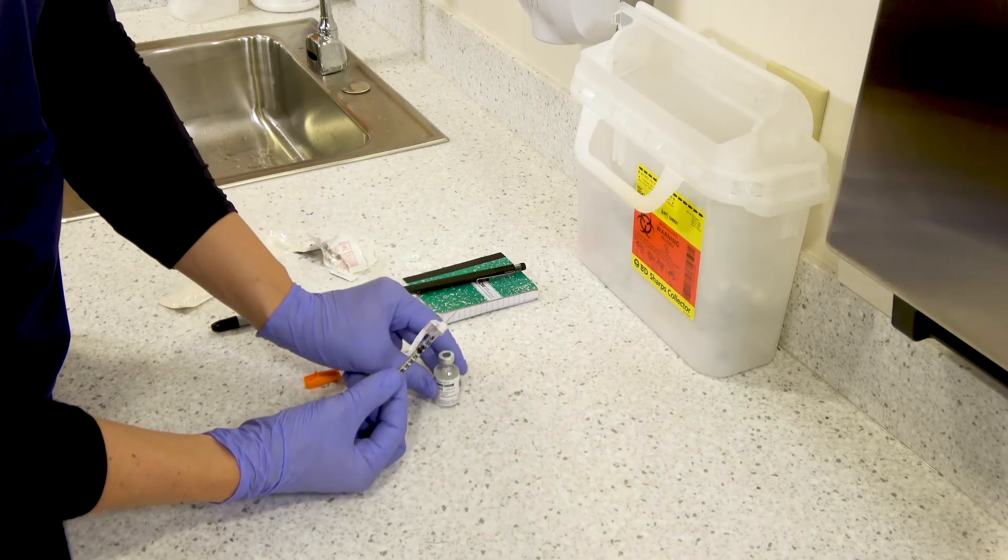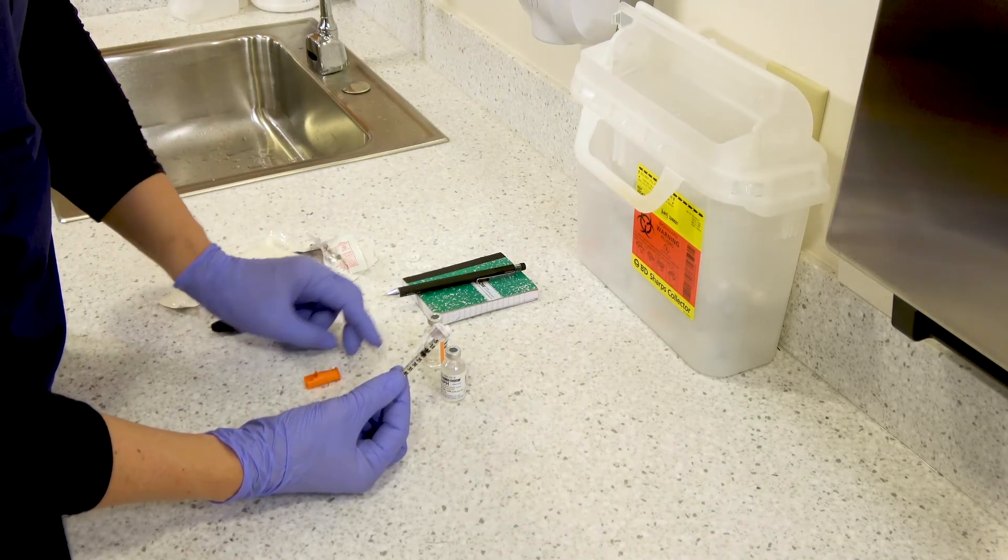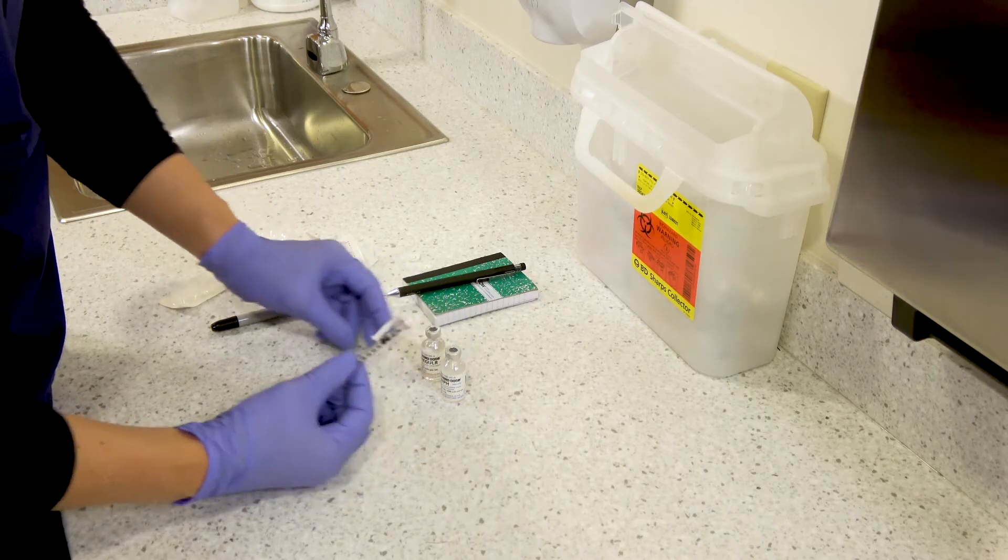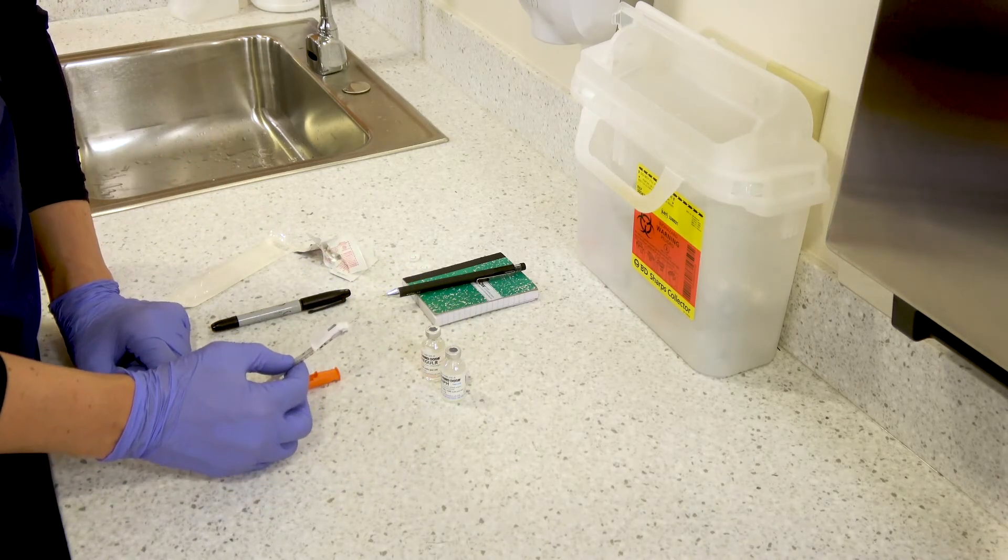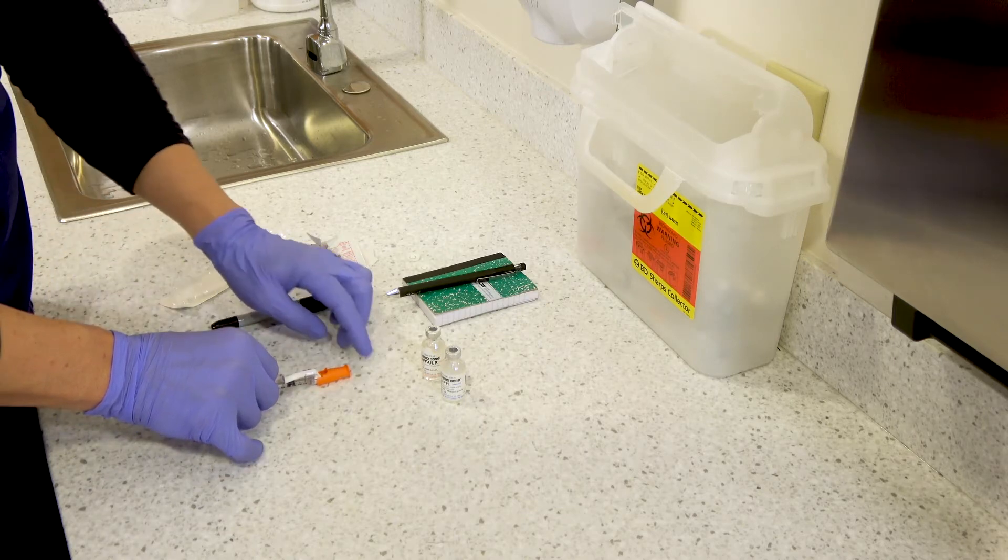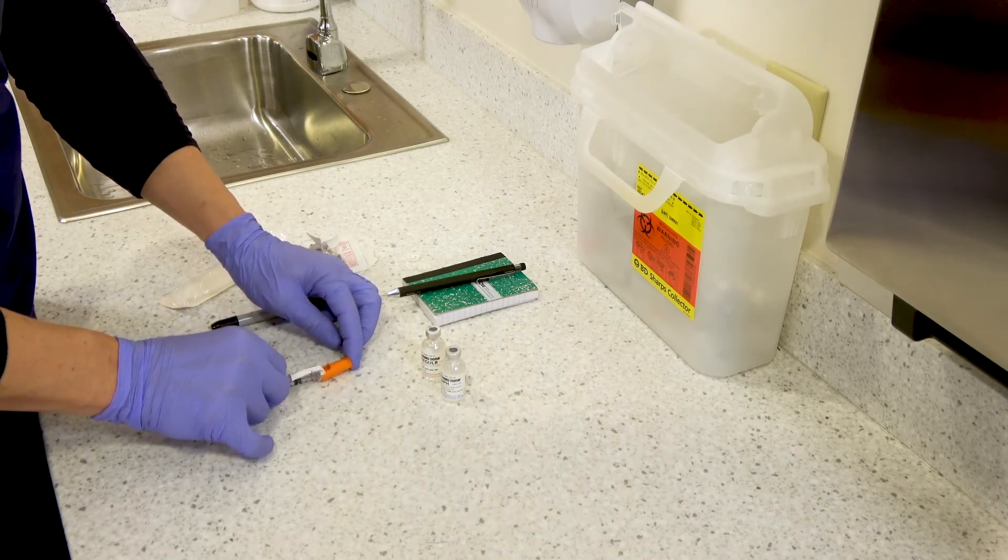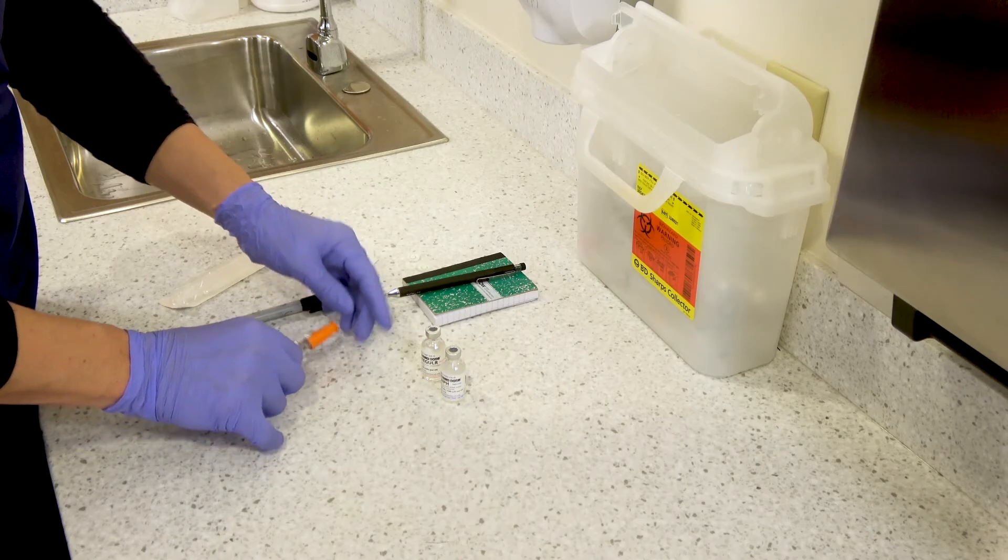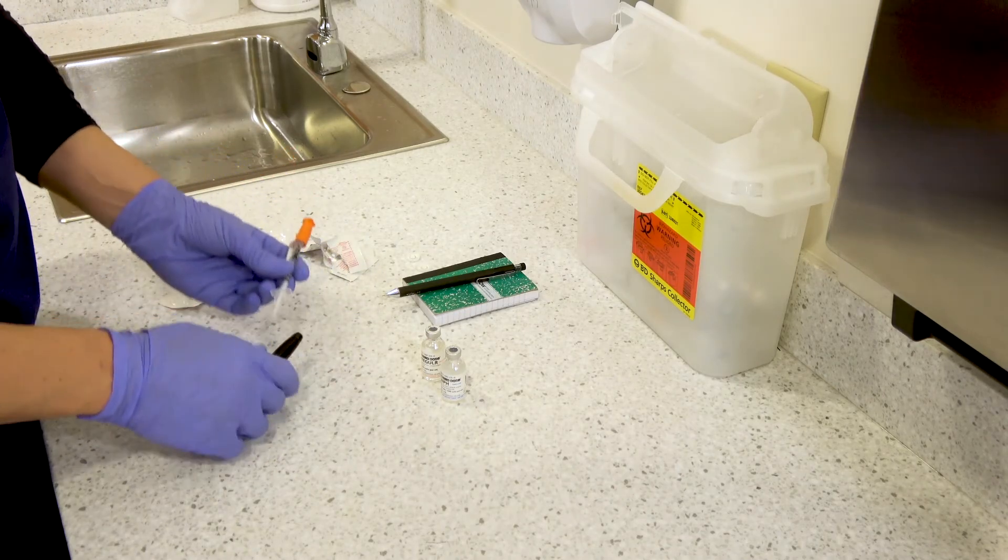If you accidentally overdraw you'll need to start over because you can't inject it back in and it's already mixed. So remove the needle from the NPH vial and prepare to administer it to the patient. If you aren't administering it right away, recap it and label the syringe with the drugs and doses, date, time, and your initials.